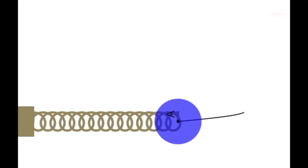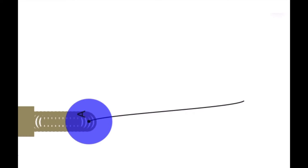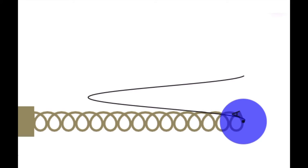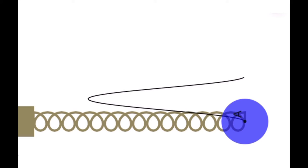Let me explain. When I release the spring, there are three major points in the system: two turning points and one equilibrium point. I have stopped the animation at one turning point. Here, the velocity of the spring is zero, so its kinetic energy is also zero. However, this spring still has potential energy that it can use to pull back. So, at this turning point, the kinetic energy of the spring is zero, while the potential energy of the spring is at its maximum.